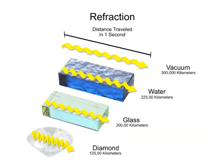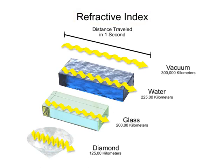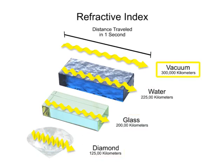Transparent materials have what is called a refractive index. This is the speed at which light travels in a medium compared to light traveling in a vacuum.